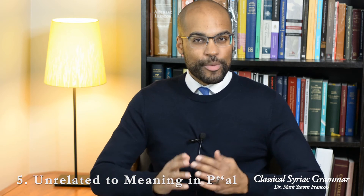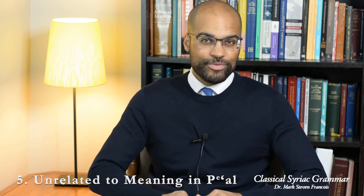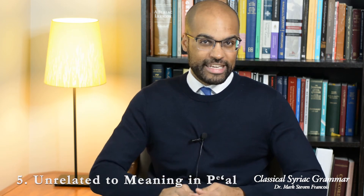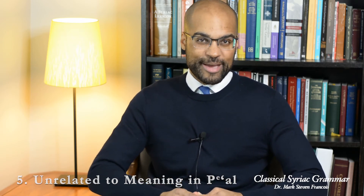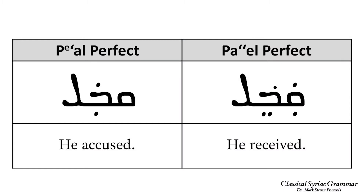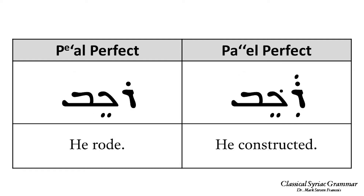Fifth, in some cases the meaning of a verb in the Pa'al is either completely unrelated or only distantly related to its meaning in the Pe'al — in which case it simply communicates a simple verbal idea. For example, 'kaval' means 'he accused' in the Pe'al, while 'kabel' means 'he received' in the Pa'al — same root, unrelated meanings. 'Rakev' means 'he rode' in the Pe'al but 'he constructed' in the Pa'al. And 'brach' means 'he bent the knee' in the Pe'al while 'barech' means 'he blessed' in the Pa'al.